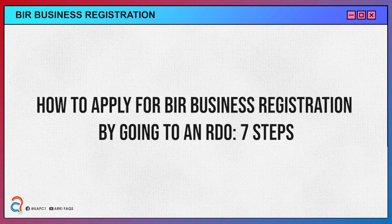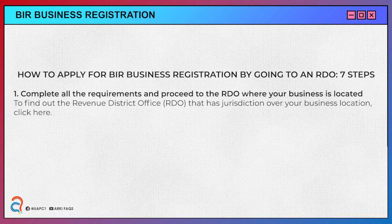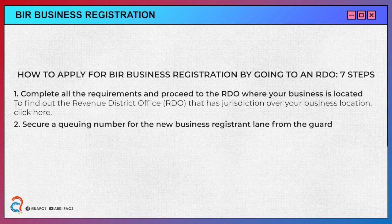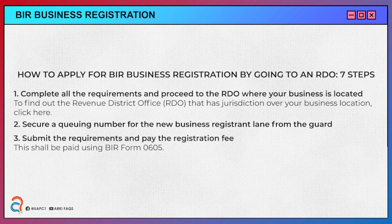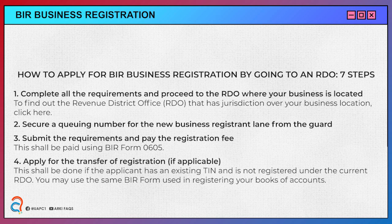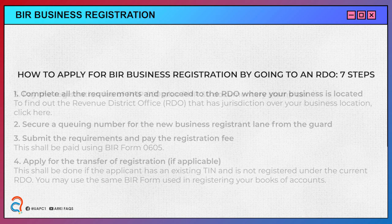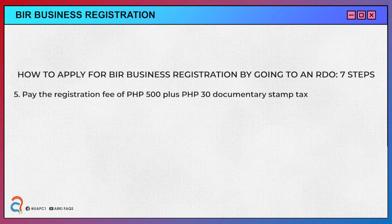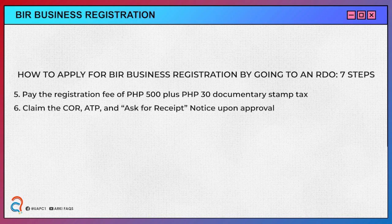Here are the steps for applying BIR business registration via RDO. Complete all the requirements and proceed to the RDO where your business is located. Secure a queuing number for the new business registrant lane. Submit the requirements and pay the registration fee. Apply for the transfer of registration if applicable. Pay the registration fee of 500 pesos plus 30 pesos documentary stamp tax. Claim the COR, ATP, and ask for receipt notice upon approval.